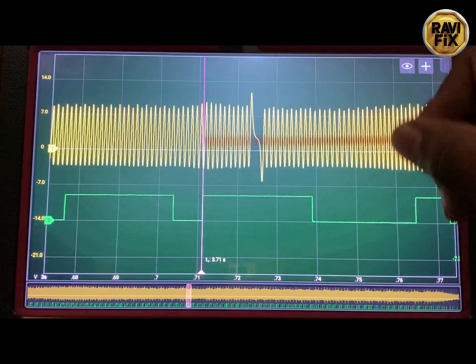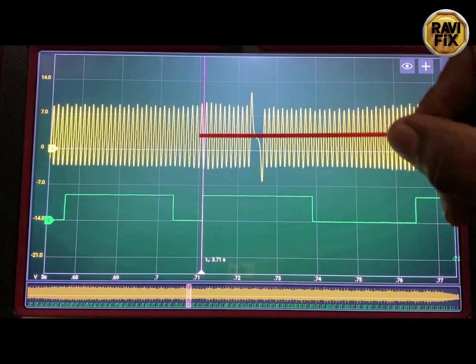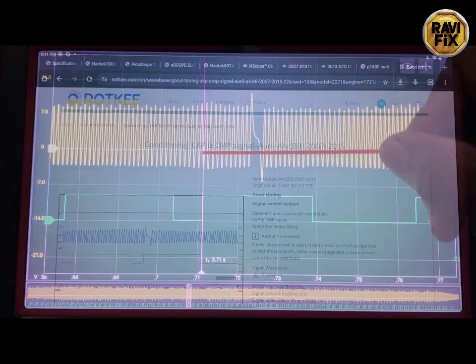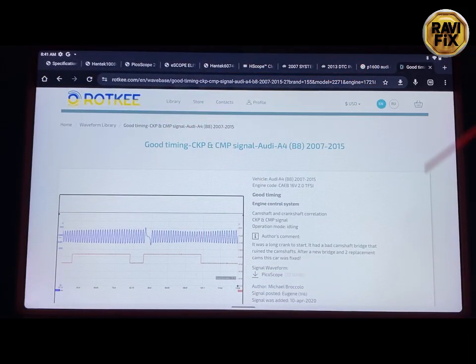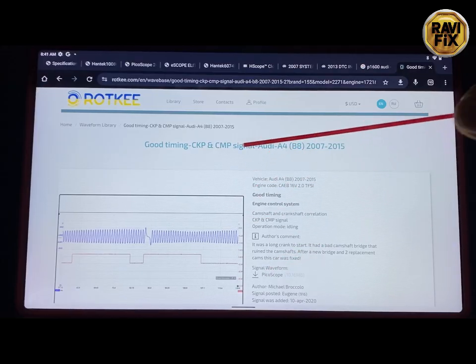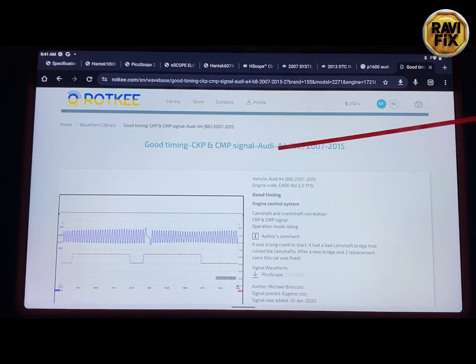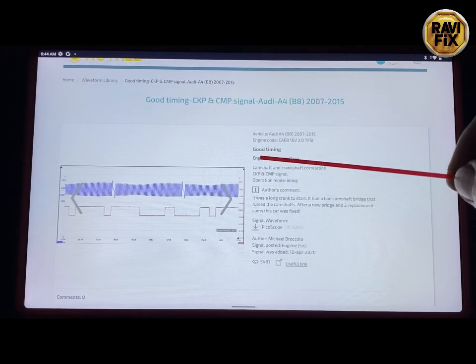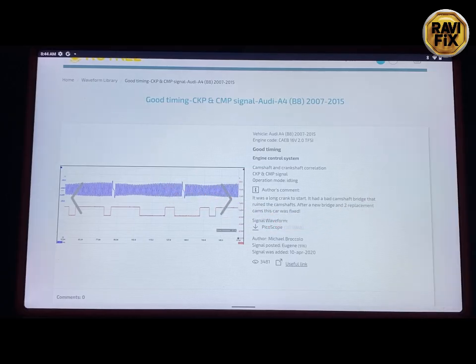We need a known-good cam-crank correlation waveform for this specific car to compare it with our waveform. Let's go to the internet and try to find a known-good cam-crank correlation waveform online. I found that known-good waveform from rotorkey.com, which is a good and excellent free service we can find on the internet. I found the exact same engine waveform. It's an Audi A4 but the engine is the same engine, 2-liter TFSI engine. Here you can see that it's a good timing waveform.